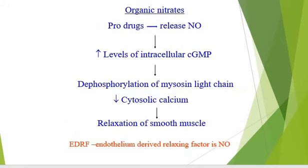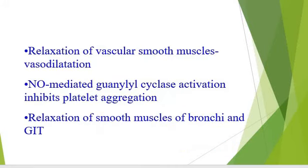What are organic nitrates? They are vascular smooth muscle relaxants that convert into an active form releasing nitric oxide in the endothelium of blood vessels, which increases the intracellular level of cyclic GMP. Dephosphorylation of the myosin light chain is responsible for decrease in cytosolic calcium and relaxation of smooth muscles. This endothelium-derived relaxing factor is nitric oxide. These nitrates are responsible for relaxation of vascular smooth muscles and have the ability of vasodilation. Nitric oxide-mediated guanylyl cyclase activation also inhibits platelet aggregation, providing another mechanism against myocardial infarction. Furthermore, they also relax the smooth muscles of the bronchi and GIT.